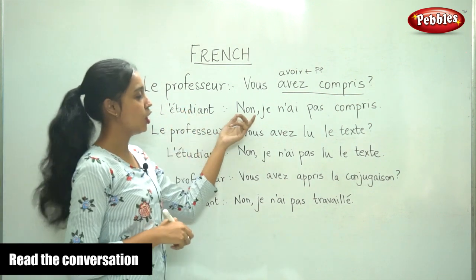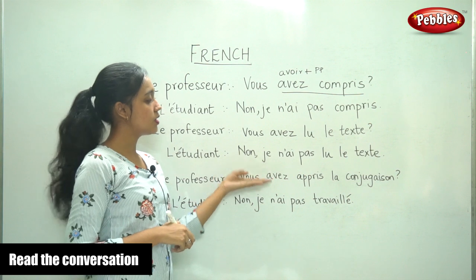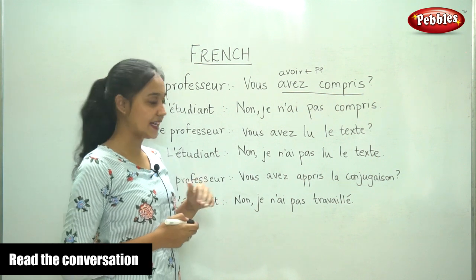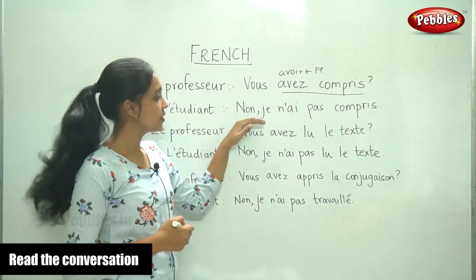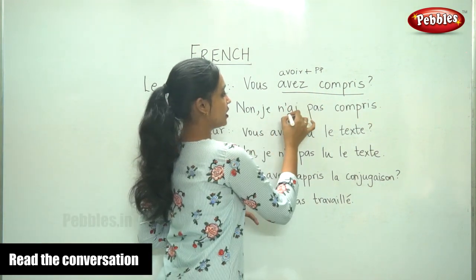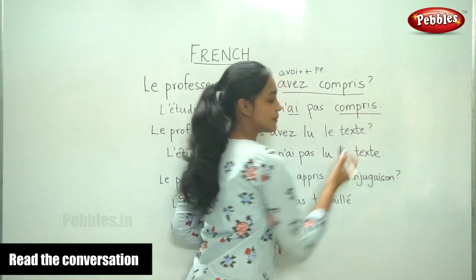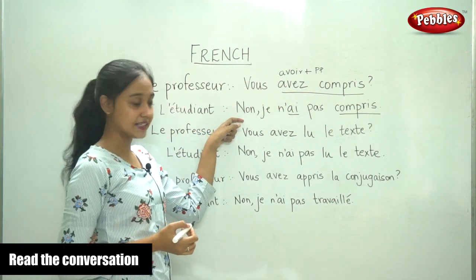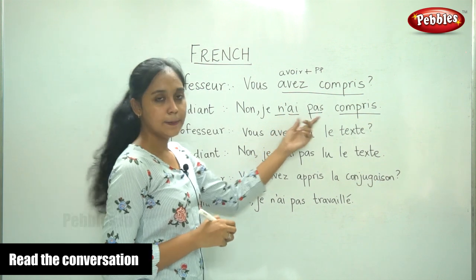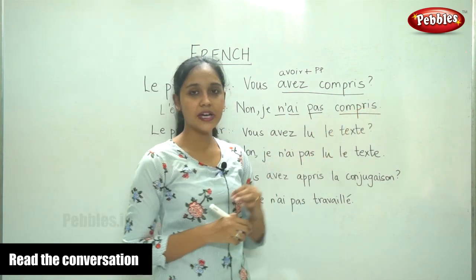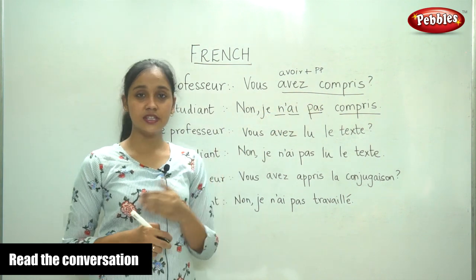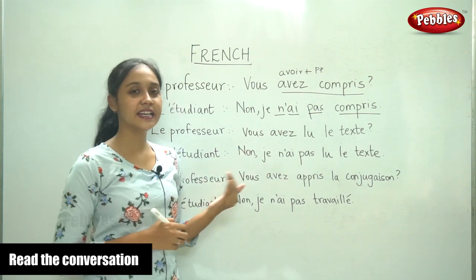The student says non. Here the student is going to answer in the negative, so we are going to see how passé composé is used in the negative form. 'Je n'ai pas compris' — I did not understand. Here we have avoir plus the past participle. Since the sentence is negative, we have ne and pas. Avoir plus past participle makes passé composé. If you add ne and pas before and after the auxiliary, we get the negative form.